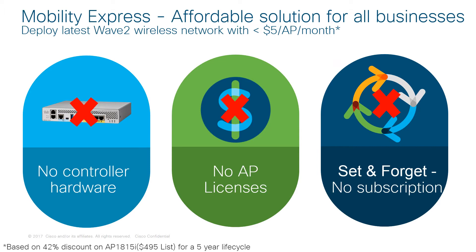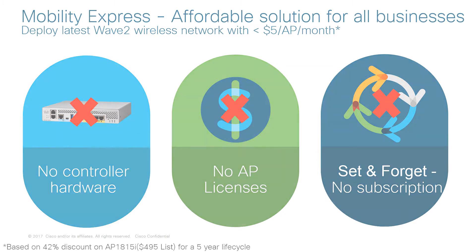Mobility Express is a true set-and-forget solution. The only thing you need to purchase in order to deploy Mobility Express is the Wave 2 access points running Mobility Express code. Mobility Express can be deployed at less than $5 per month per AP based on the standard Cisco discount for a five-year life cycle with Cisco 1815i access points, making Mobility Express the most affordable enterprise-class solution for SMB.